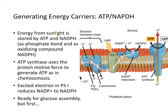Energy from sunlight is stored by NADPH and ATP — as a phosphate bond in ATP's case, and as a reduced compound in NADPH. ATP synthase uses the proton motive force, as in chemiosmosis. The electron in photosystem I reduces NADP+ to NADPH. And now we are ready for assembling some glucose.